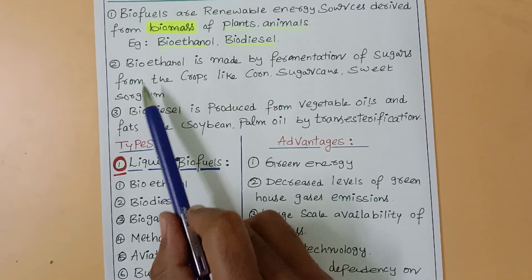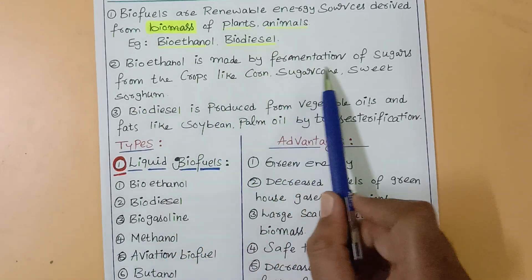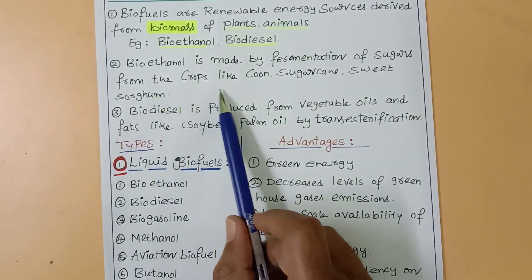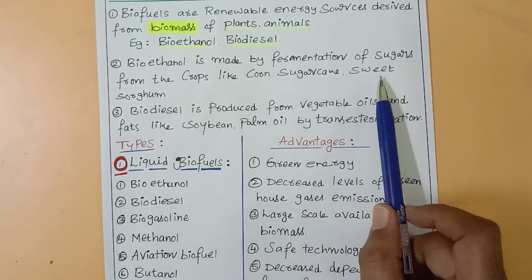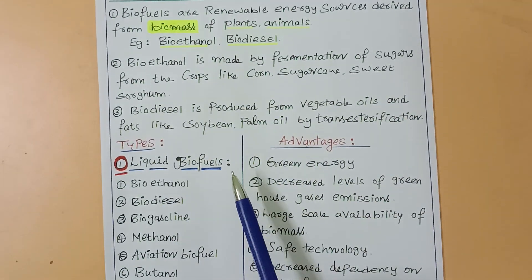For example, bioethanol is made by fermentation of sugars from crops like corn, sugarcane, sweet sorghum, etc.